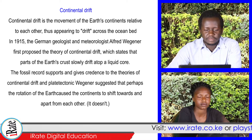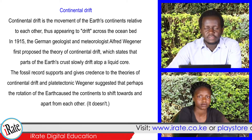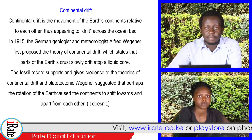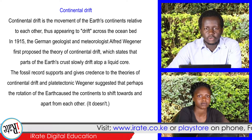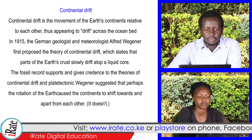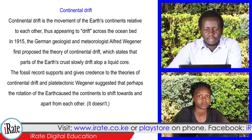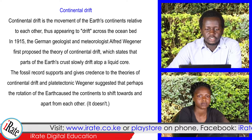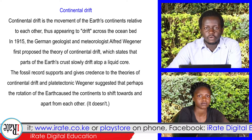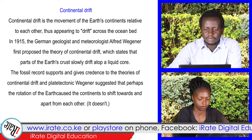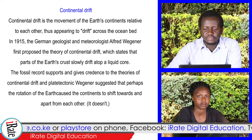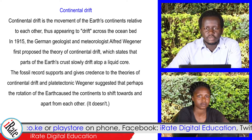Continental drift is the movement of the Earth's continents relative to each other, thus appearing to drift across the ocean bed. In 1915, the German geologist and meteorologist Alfred Wegener first proposed the theory of continental drift, which states that parts of the Earth's crust slowly drift atop a liquid area.